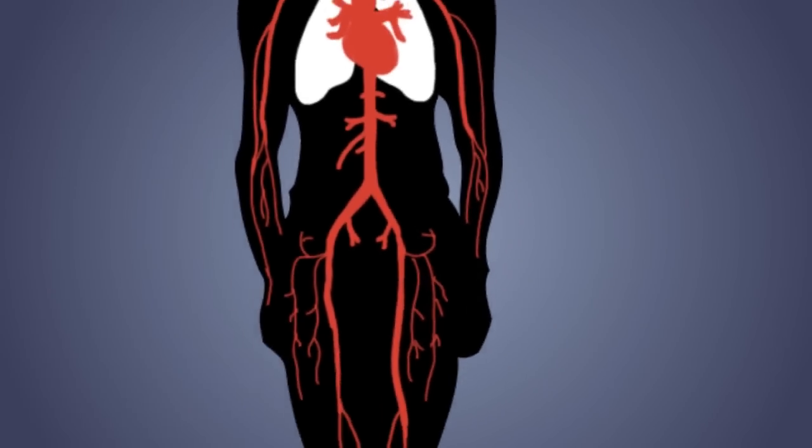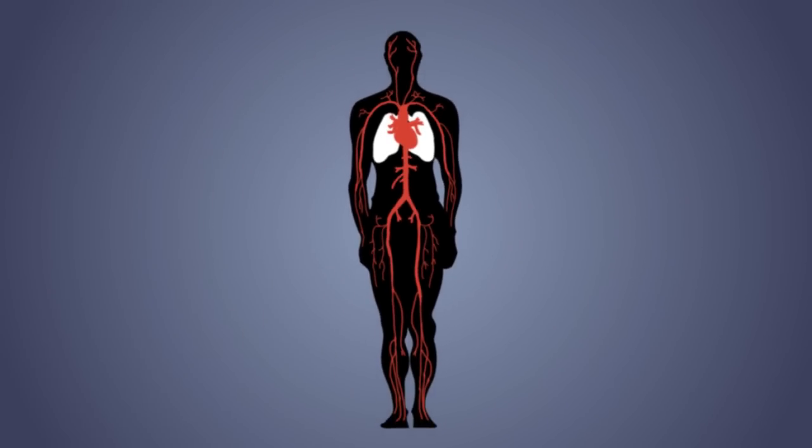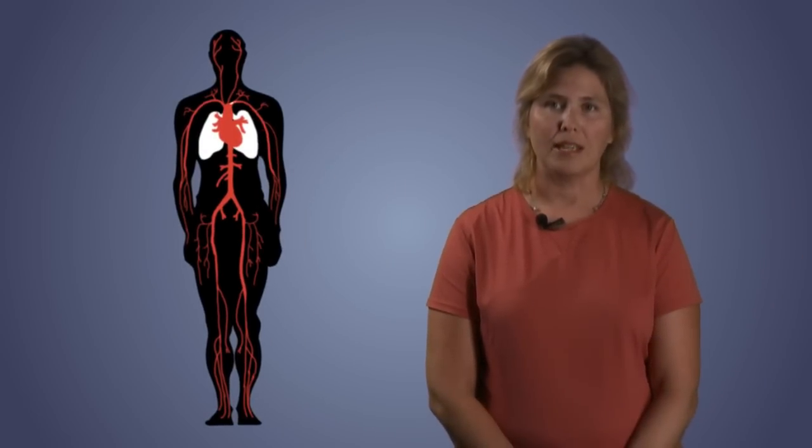Hemoglobin is a protein that binds to and transports oxygen from our lungs to our cells. How does a red blood cell go about making millions and millions of hemoglobin proteins to transport oxygen?